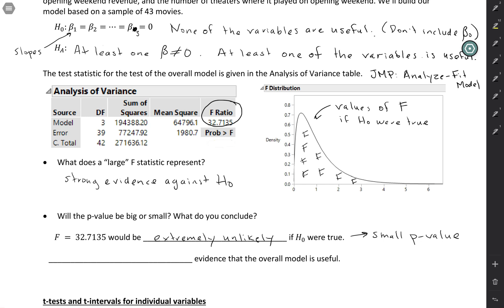So with a really small p-value, that means that we have very strong evidence against the null hypothesis. In this case, very strong evidence that the overall model is useful.